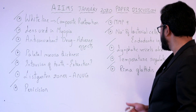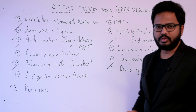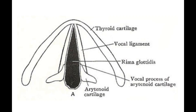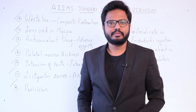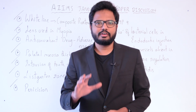Rima glottidis: it is a potential space, or opening, between the true vocal cords and the arytenoid cartilage of the larynx, as shown in the illustration.